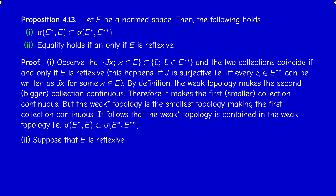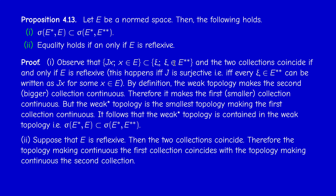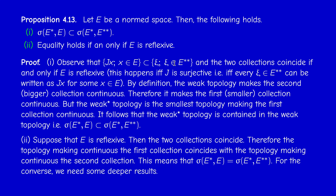We have to prove two implications: one is easy, one is harder. If E is reflexive then J is surjective and the two collections coincide; therefore the smallest topology making one continuous is the same as the smallest topology making the other continuous, so the weak-star topology equals the weak topology. The converse is harder and requires deeper results that we will cover later.